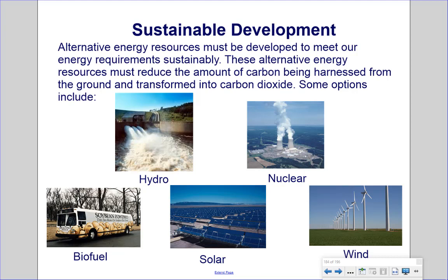Alternative energy resources must be developed to meet our energy requirements sustainably. These resources must reduce the amount of carbon being harnessed from the ground and transformed into carbon dioxide, which is a greenhouse gas. Some options include hydropower, nuclear power, biofuels, solar power, and wind power.